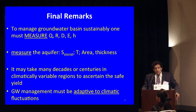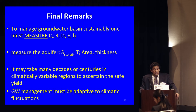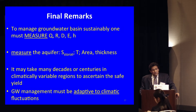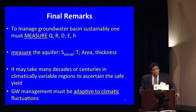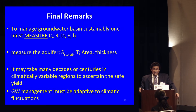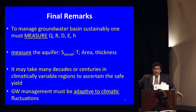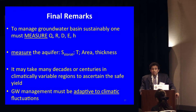Final remarks: to manage your groundwater basin sustainably, you must measure the fluxes — there is no escape from that. You need field measurements of the aquifer: storativity, thickness, and aerial extent. If those are unknown, you're shooting in the dark. It may take decades or centuries in these climatically variable regions to ascertain the safe yield. Finally, groundwater management must be adapted to climatic conditions. The safe yield is the baseline, but as climatic conditions shift toward drought, you must adaptively adjust for that. When there's more groundwater available, recharge it elsewhere. The safe yield is the baseline, but a very important one.